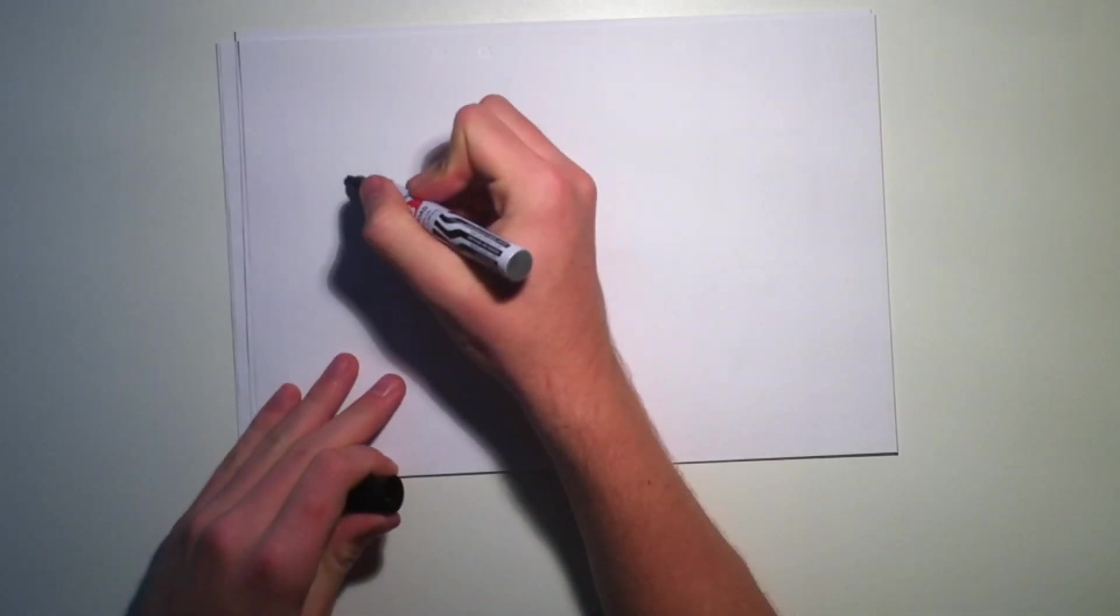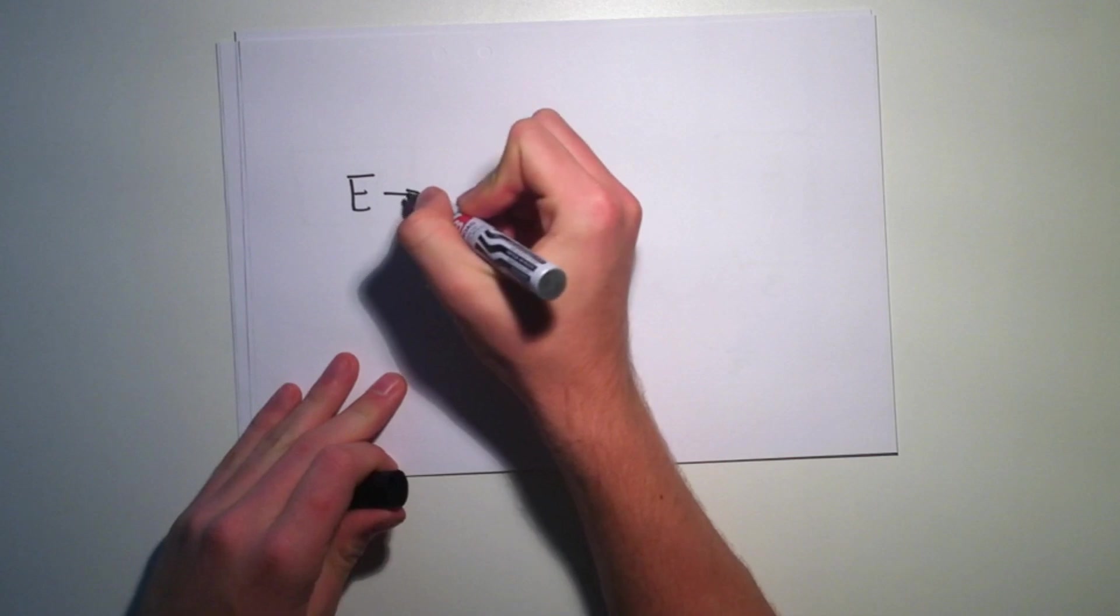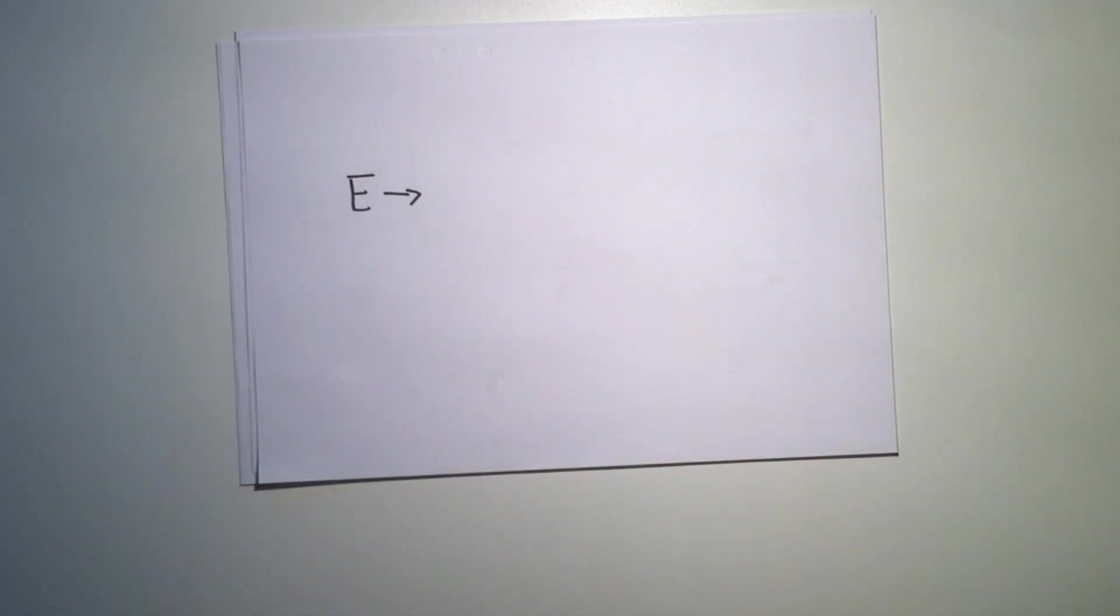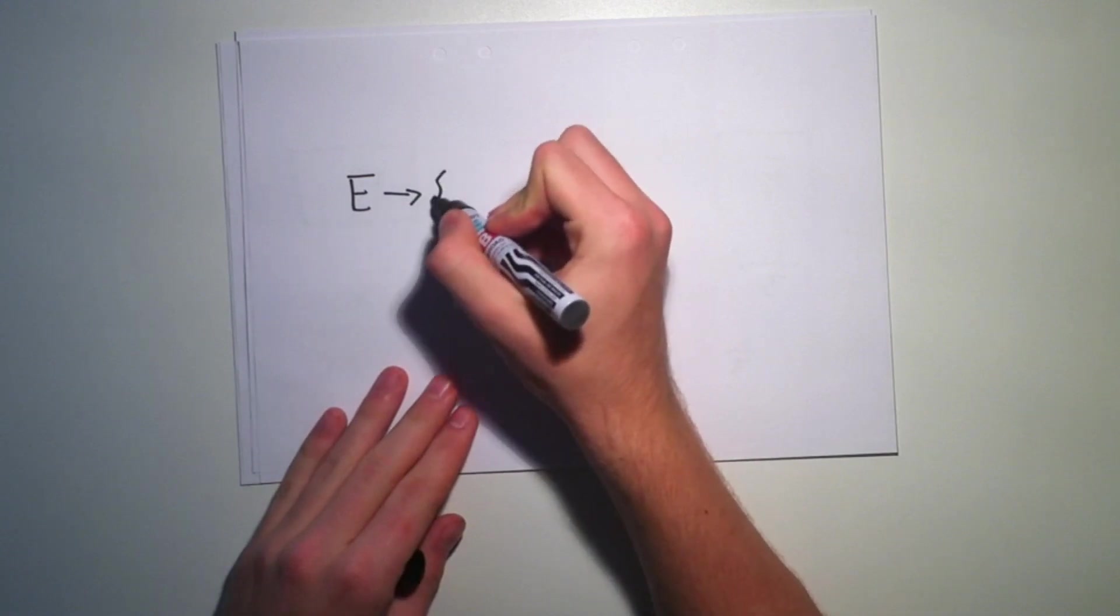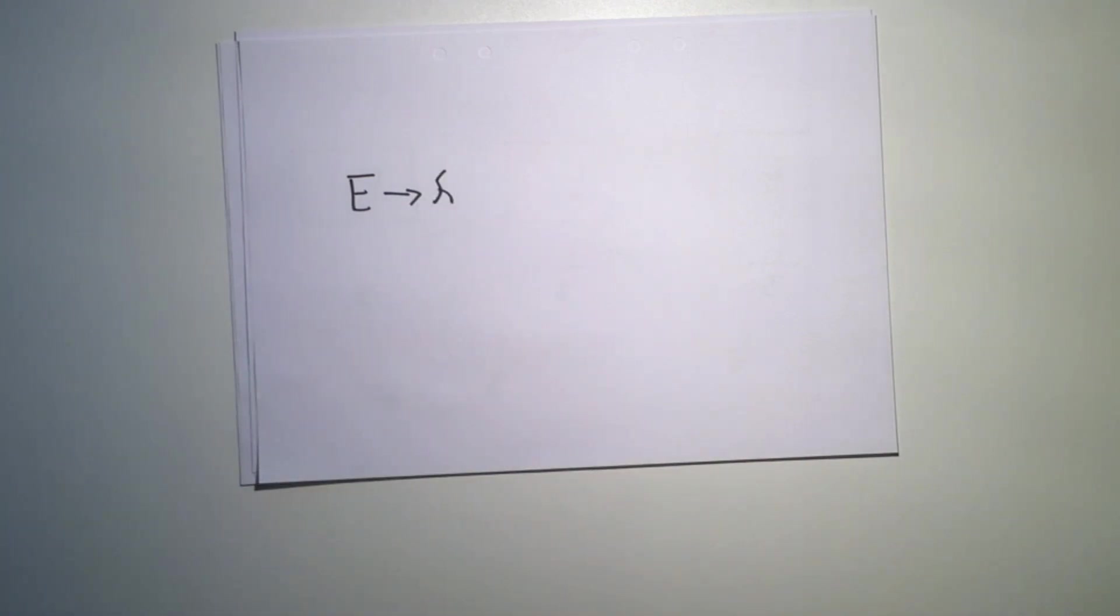The energy emitted from a black body is actually emitted in energy packages, not in an even stream, where the energy package E is proportional to the wavelength of the light. By this, he could work out one of the most important equations of modern physics, and perhaps one of the most famous constants.